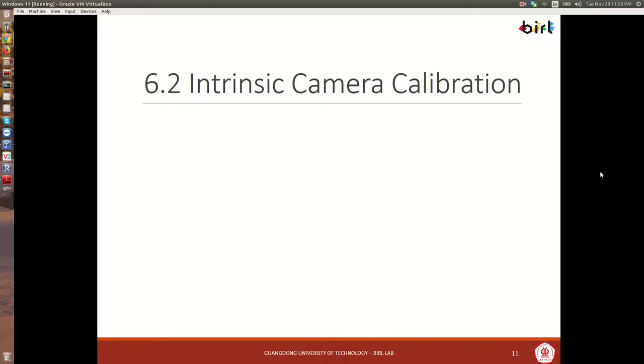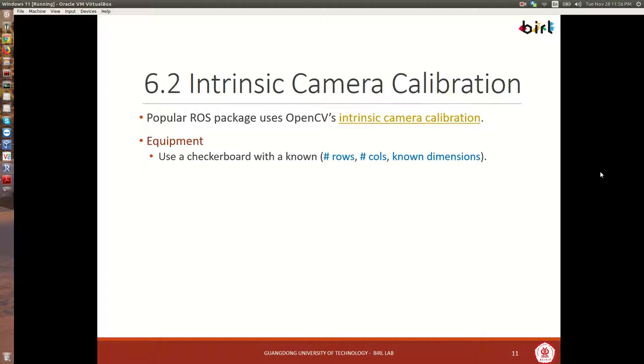For section 6.2, we're going to look at the intrinsic calibration routine in ROS. For this ROS package, we're going to use an OpenCV routine called intrinsic camera calibration. The equipment to be used for the calibration is a simple checkerboard. This checkerboard has a number of white and black squares, and we know the number of rows, the number of columns, and the dimensions of each of those squares. We'll take that checkerboard in simulation or in real life and wave it in front of the camera, taking a number of shots at different angles from which we're going to do the parameter computation.